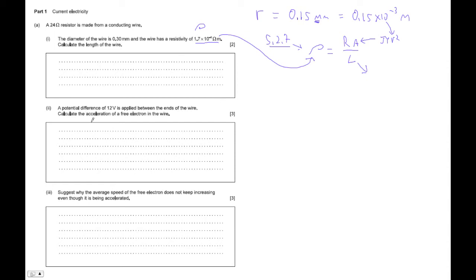I looked at this one, calculate an acceleration of a free electron in the wire. That would be the acceleration due to the electric field causing the current. We just figured out the length of the wire, it's about 100 meters.